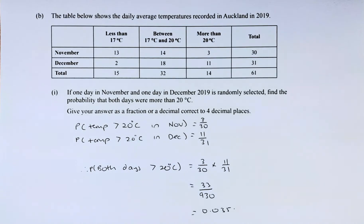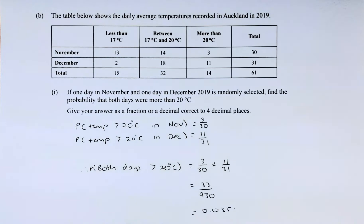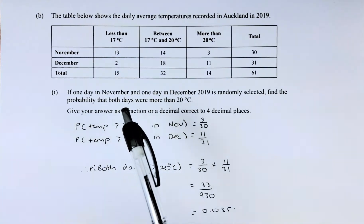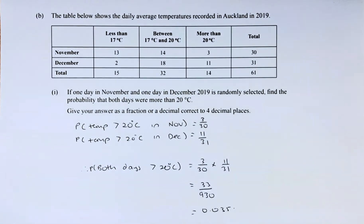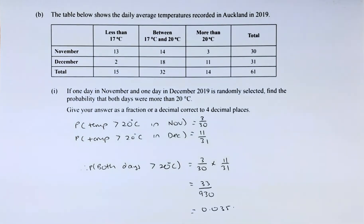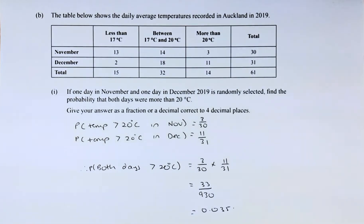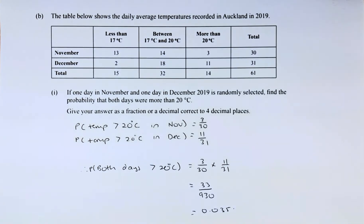The table below shows the average temperatures recorded in Auckland in 2019. We have a table of November and December with columns for less than 17 degrees, between 17 and 20, and more than 20 degrees. The question is: if one day in November and one day in December is randomly selected, find the probability that both days were more than 20 degrees. Give your answer as a fraction or decimal correct to 4 decimal places.